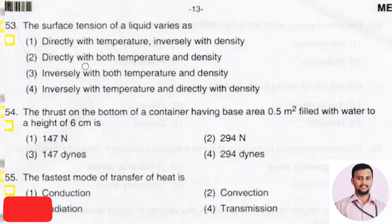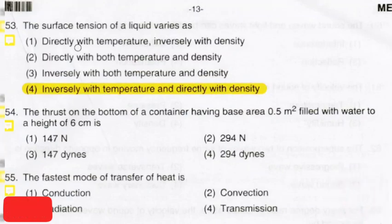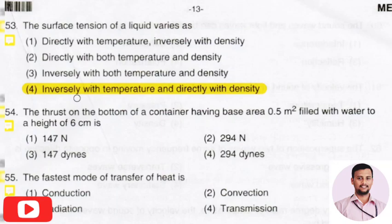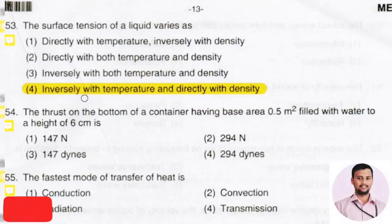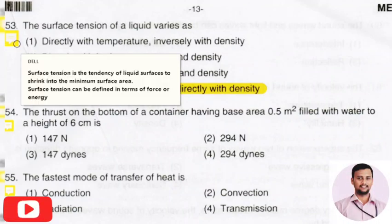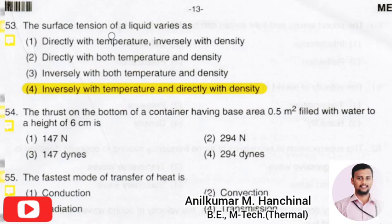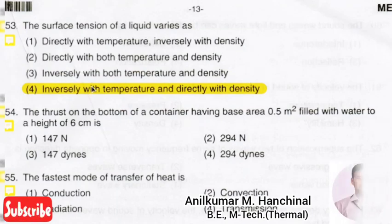The next question: the surface tension of a liquid varies as? The right answer is option 4 — surface tension of a liquid varies inversely with temperature and directly with density. Surface tension is the tendency of a liquid surface to shrink into minimum surface area. It varies inversely with temperature and directly with density.